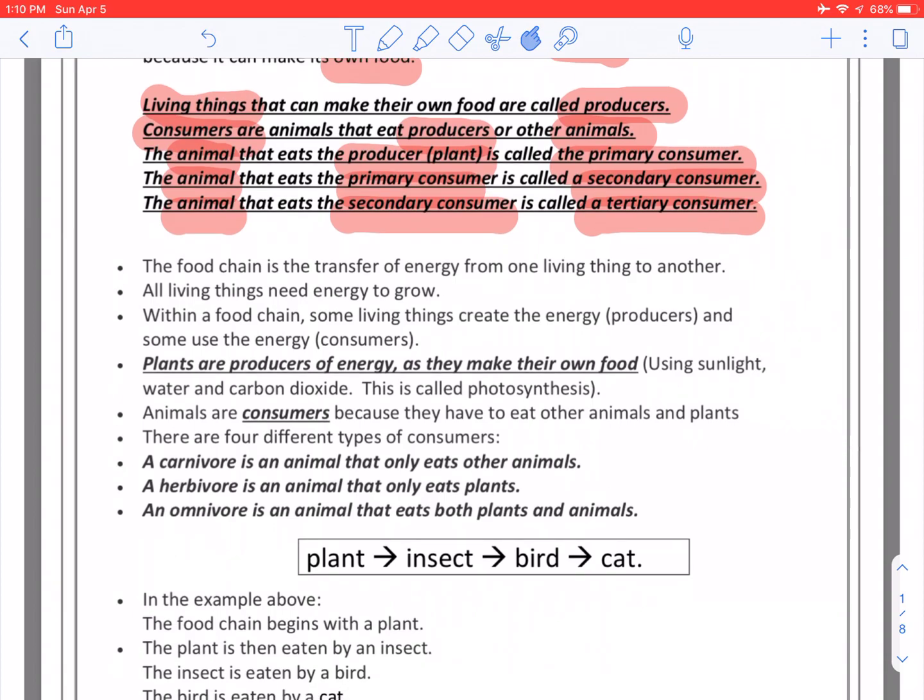A food chain is the transfer of energy from one living thing to another. All living things need energy to grow. Within a food chain, some living things create the energy, which are the producers, and some use the energy, which are the consumers.